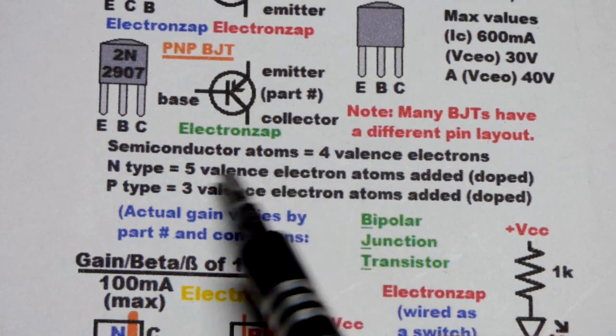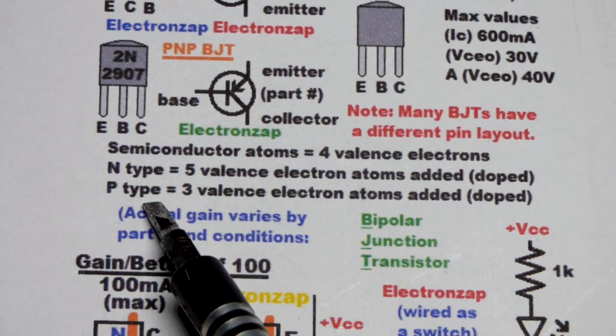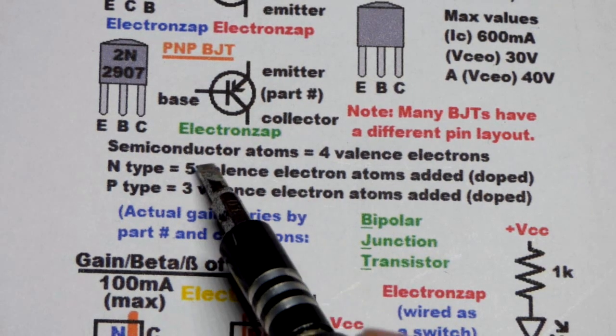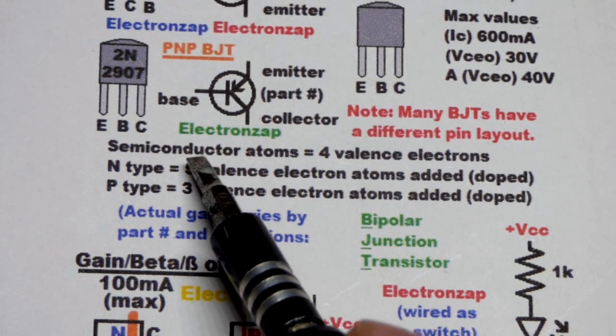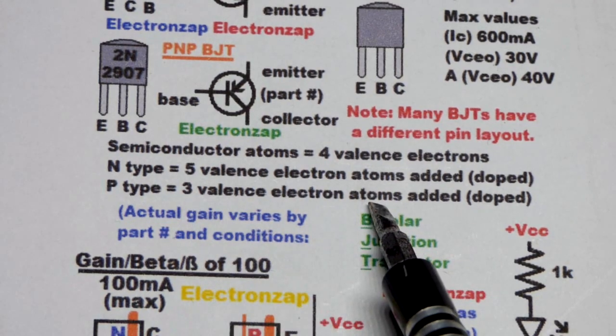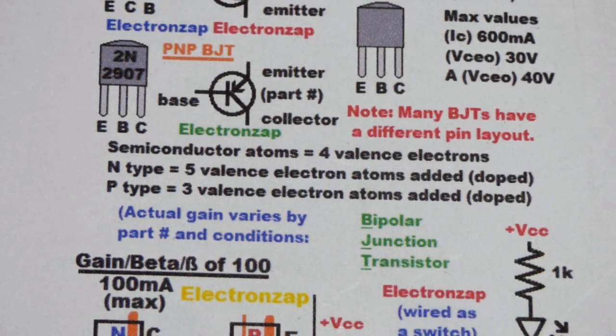And then P-type material, atoms that have three valence electrons, they will let that one that's floating around pass through relatively easily because it has one less electron than the semiconductor material.